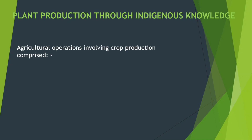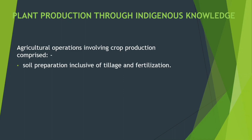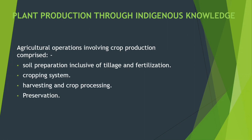Next topic: Plant production through indigenous knowledge. Agricultural operations involving crop production comprise: soil preparation inclusive of tillage and fertilization; cropping systems; harvesting; and crop processing and preservation.